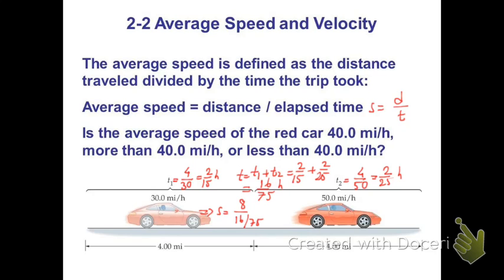divide this by the total time. And what we find is, at the end, 75 divided by 2 miles per hour. So it's less than 40 miles per hour.